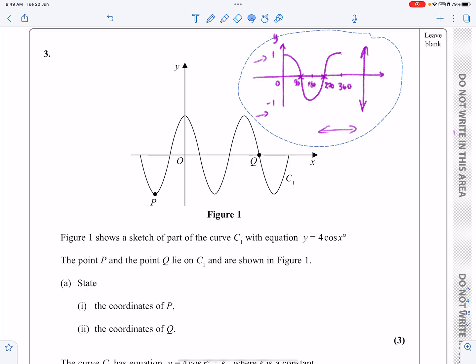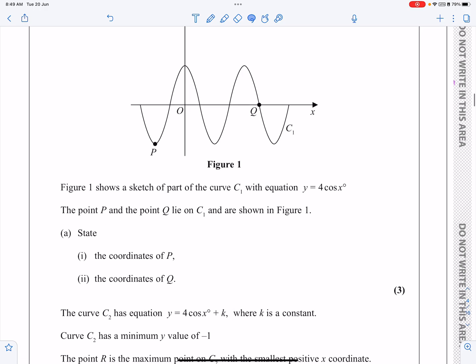So let's now look at the question we've got here. If they're telling me this is 4 cos x, I can say that that's 4. I can still say that this is 90, 180 where the minimum is, 270, 360 there.